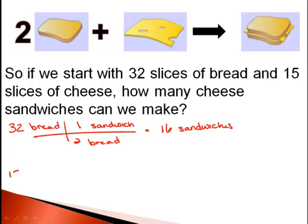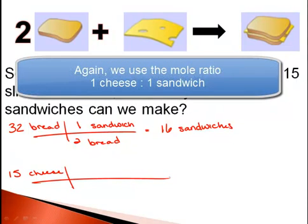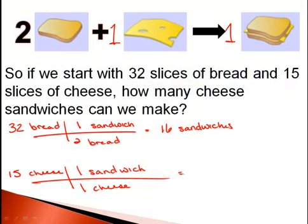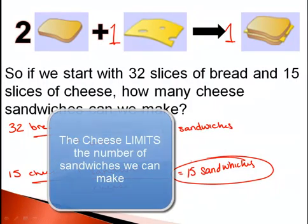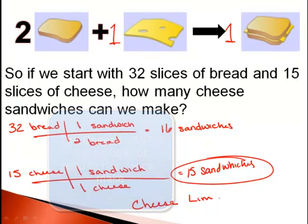If we had 15 slices of cheese, from our balanced equation, we see that each sandwich gets 1 slice of cheese. Well, 15 slices of cheese would allow us to make 15 sandwiches. As you can see here, 15 sandwiches is the maximum that we can make. Once we make 15 sandwiches, we're out of cheese. This makes cheese the limiting reactant.